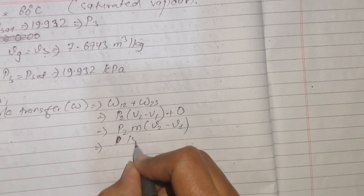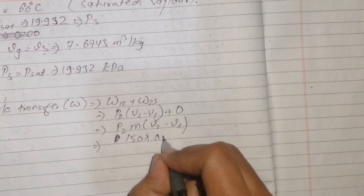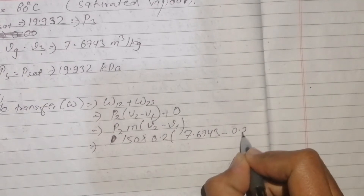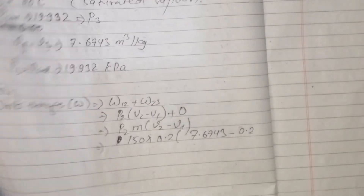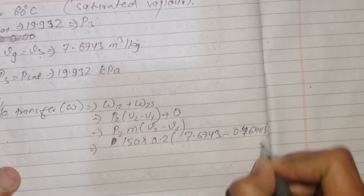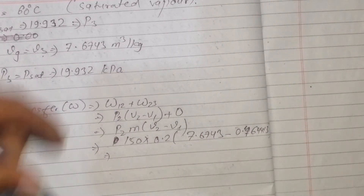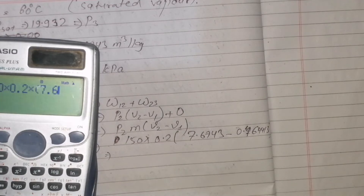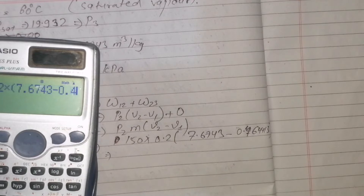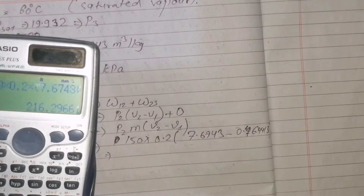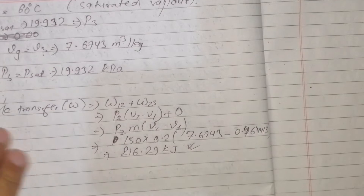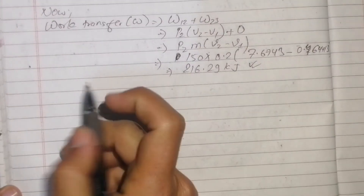W12 = 150 * 0.2 * (7.6743 - 0.46441) = 216.29 kJ. Total work transfer to the system is 216.29 kilojoules.